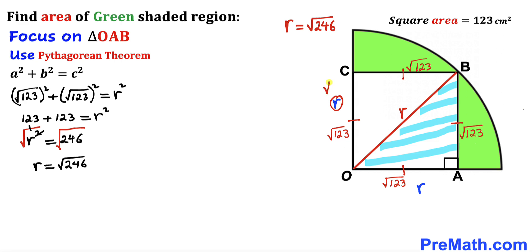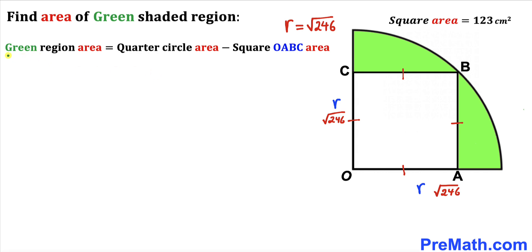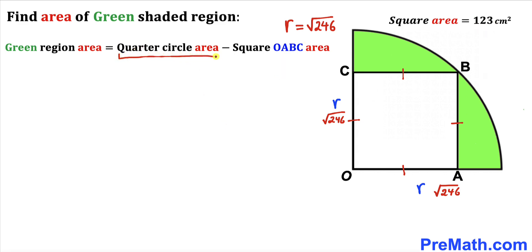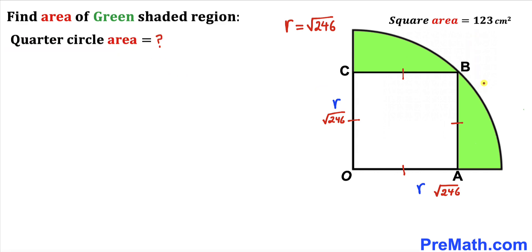Now let's make an observation. The area of the green shaded region equals the area of the quarter circle minus the area of square OABC. The area of the square has been given as 123 centimeters square, so our only remaining task is to calculate the area of the quarter circle.